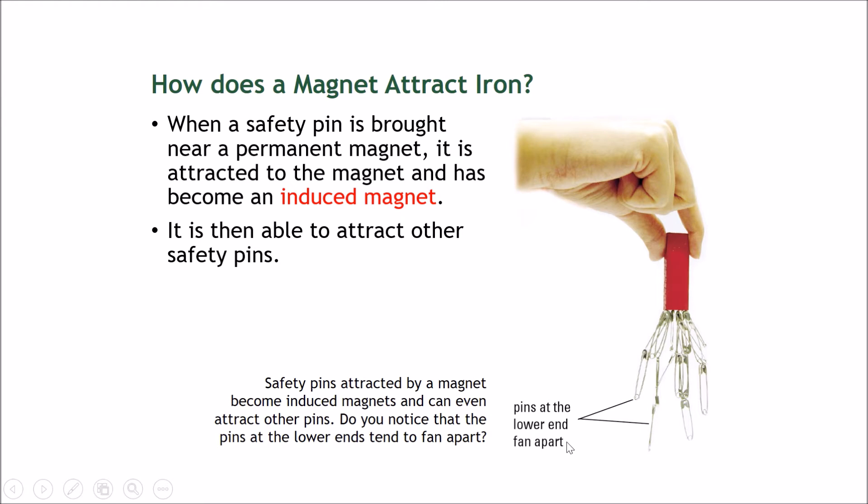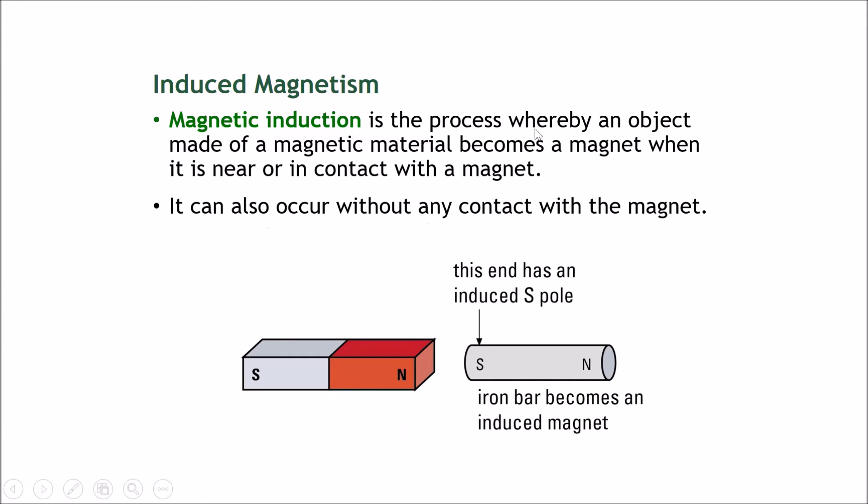Magnetic induction is a process whereby an object made of a magnetic material becomes a magnet when it is near or in contact with a magnet. It can also occur without any contact with the magnet.